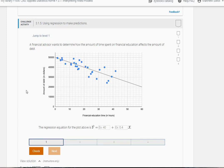This is challenge exercise 3.1.5. It says a financial advisor wants to determine how the amount of time spent on financial education affects the amount of debt. What you're seeing here is that the more time people spend on financial education, it looks like their debt level's going down, which is a good thing.